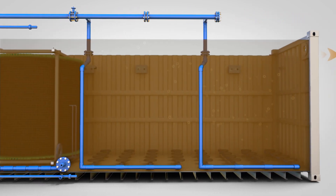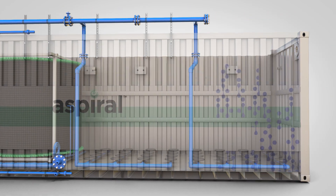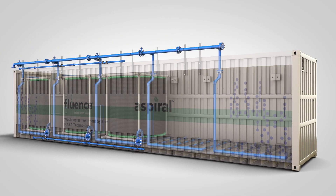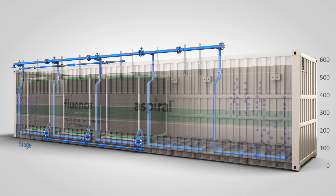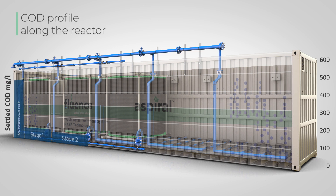A short mixing duration is sufficient to homogenize the contents of each stage of the spiral reactor. In a four-stage spiral reactor, nutrients are removed in a one-pass process without internal circulation. COD is almost fully adsorbed by the suspended biomass upon contact — this is known as biosorption — and the adsorbed COD is gradually metabolized along the reactor.